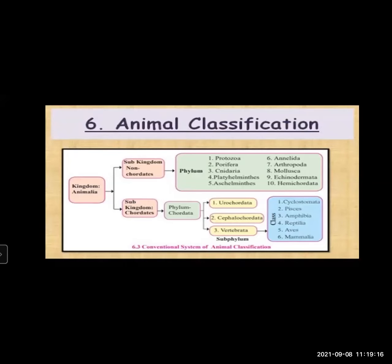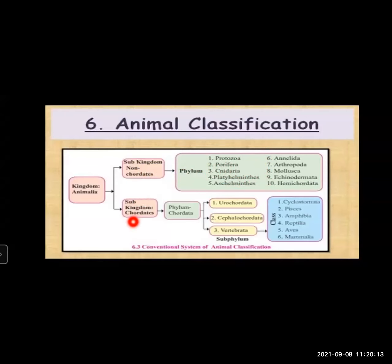Now students, as we discussed non-chordates and chordates and different phylums, let us see how the traditional or conventional system of animal classification concept map looks. Kingdom Animalia divided into two sub-kingdoms: non-chordates and chordates. Non-chordates is further classified into 10 phylums — you have to remember the names: Protozoa, Porifera, Cnidaria, Platyhelminthes, Aschelminthes, Annelida, Arthropoda, Mollusca, Echinodermata, and Hemichordata. Chordates are classified into single phylum called Chordata as they have notochord.